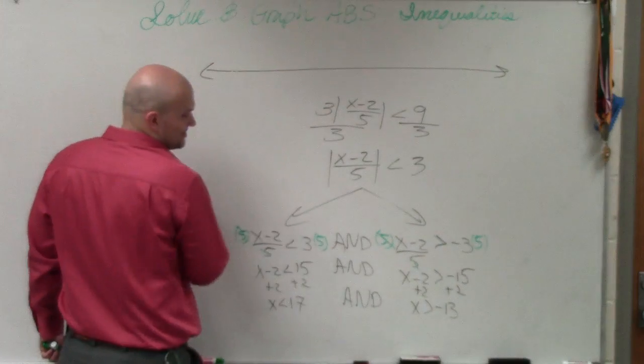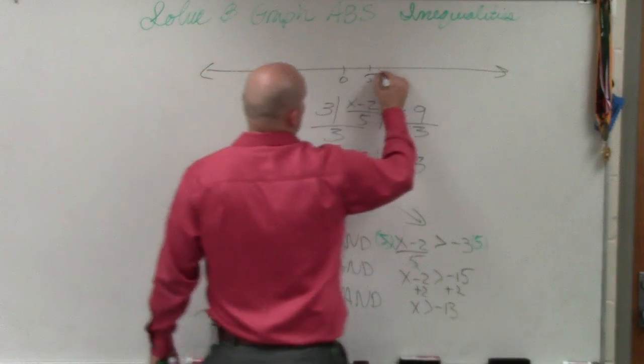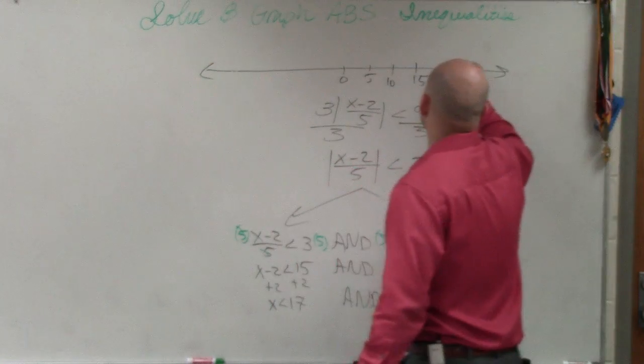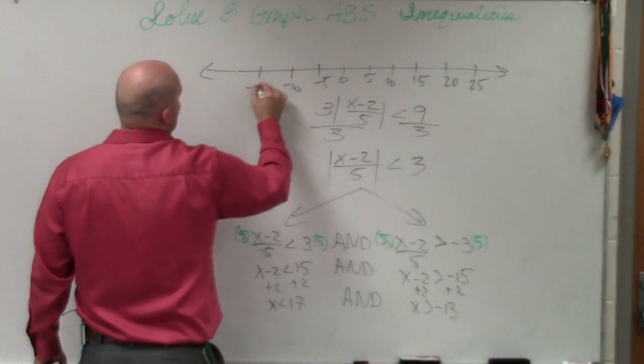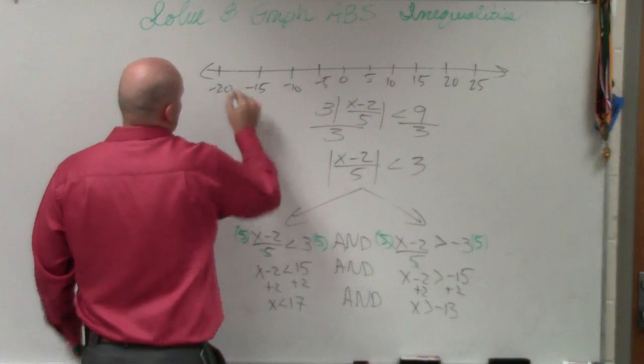I'm going to go by fives on this one. 0, 5, 10, 15, 20, 25, negative 5, negative 10, negative 15, negative 20.